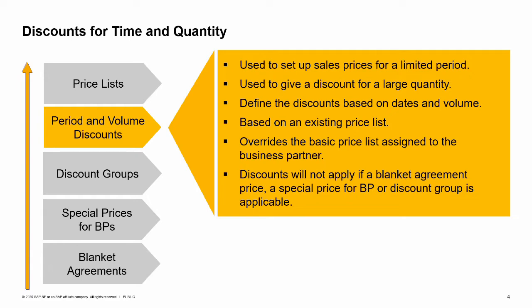The discounts entered here will override the basic price in the business partner's assigned price list, as long as the unit of measure specified and the discount matches the unit of measure in the row. The discounts will not apply if a blanket agreement price, a special price for the business partner, or a discount group is applicable for the customer or item. If a discount group is found, the discounts from the discount group apply; however, a price from a period and volume discount price list may also be applied.